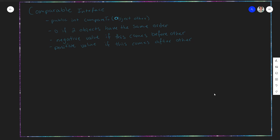There's some important terminology here. compareTo expects something called total ordering. Total ordering means there are going to be three key things to keep in mind — three pieces of terminology to remember: irreflexive, trichotomy, and transitivity.